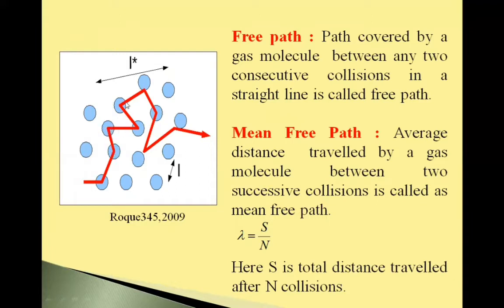You can observe after every collision, the molecule gets its direction changed. It will change its direction after every collision. And the path is zigzag. After number of collisions, the path shown by this red line is zigzag path.